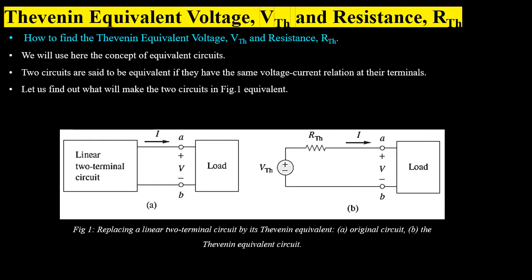Now we will study how to find the Thevenin equivalent voltage VTH and Thevenin equivalent resistance RTH using the concept of equivalent circuit. In figure A we have a circuit with a fixed part and a variable load. In figure B we transform the fixed part into a Thevenin circuit consisting of VTH in series with RTH connected to the load at terminals A to B. We will now explore the conditions under which these two circuits are equivalent.